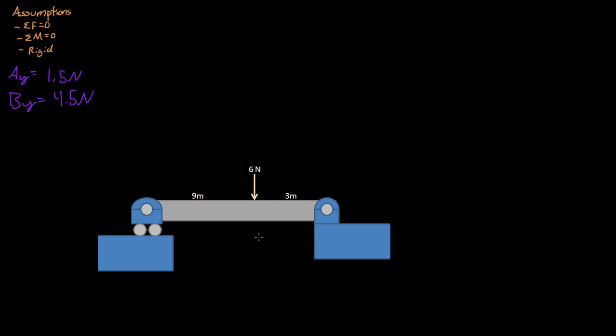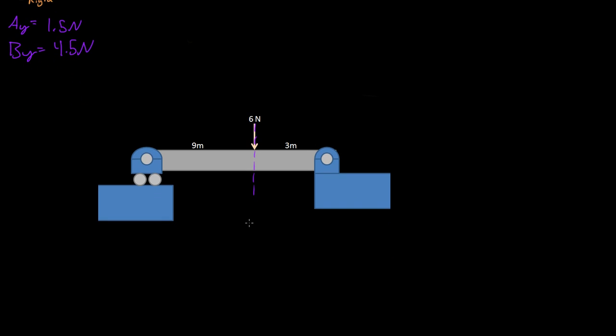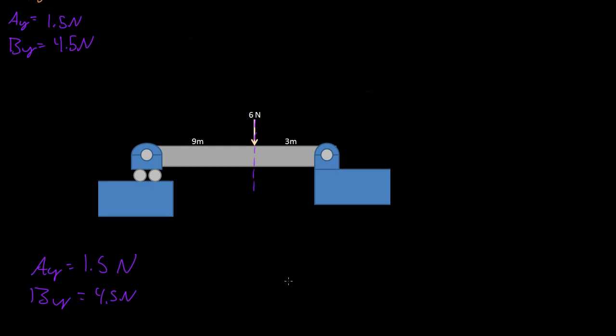Well, to get the moment, or I guess, let's do shear, shear first. If we broke this in half, broke it in half right down here, right there. And we now have AY equals 1.5 Newtons. I'm just going to write that down here. AY equals 1.5 Newtons. BY equals 4.5 Newtons. We broke that in half.